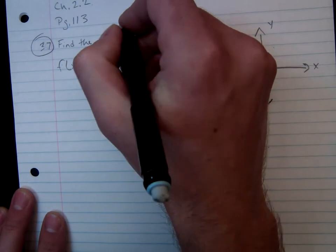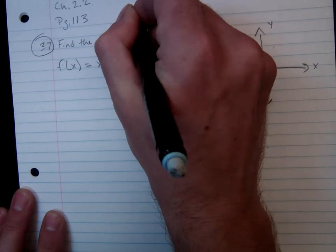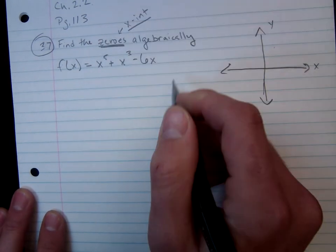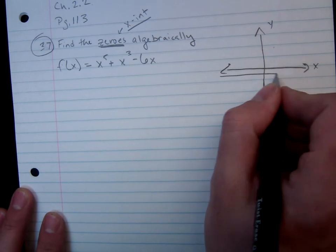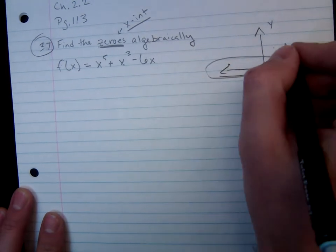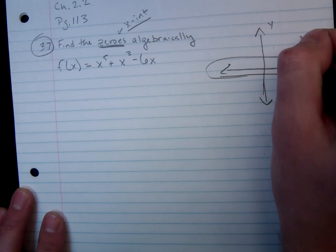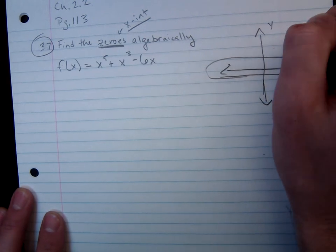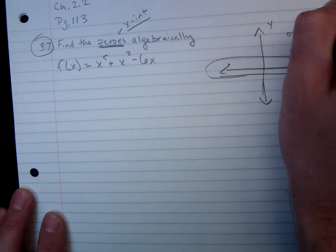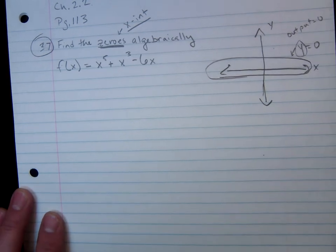Another term for zeros would be the x-intercepts, and the reason it's called zeros is along the x-axis. That's when we know that y is, in fact, equal to zero. Or, in more general terms, the output is equal to zero.